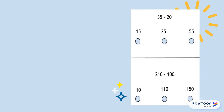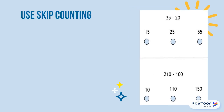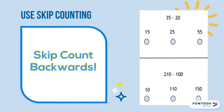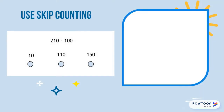This problem also requires our skip counting skills, but we're doing subtraction in this one. So we don't skip count forward — we need to skip count backwards. We have to figure out what place value to skip count by. I see the problem has 210, but we're subtracting 100. There are no tens in hundreds, so we need to skip count by hundreds.